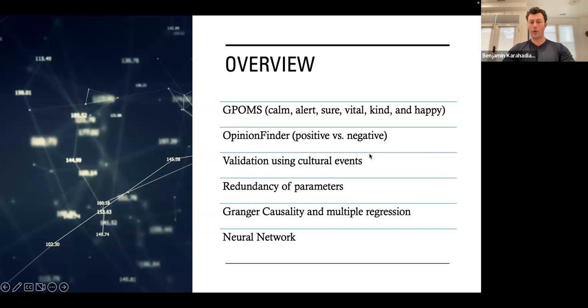A brief overview of the progress of the paper. They start with two tools used to conduct sentiment analysis on the tweets that they mine. The first one is the GPOMS, which is the Google Profile of Mood States with six dimensions: calm, alert, sure, vital, kind, and happy. Then they use Opinion Finder, which is a one-dimensional positive versus negative evaluation of text. Next, they move on to validating these two methods by choosing a period with known cultural events.